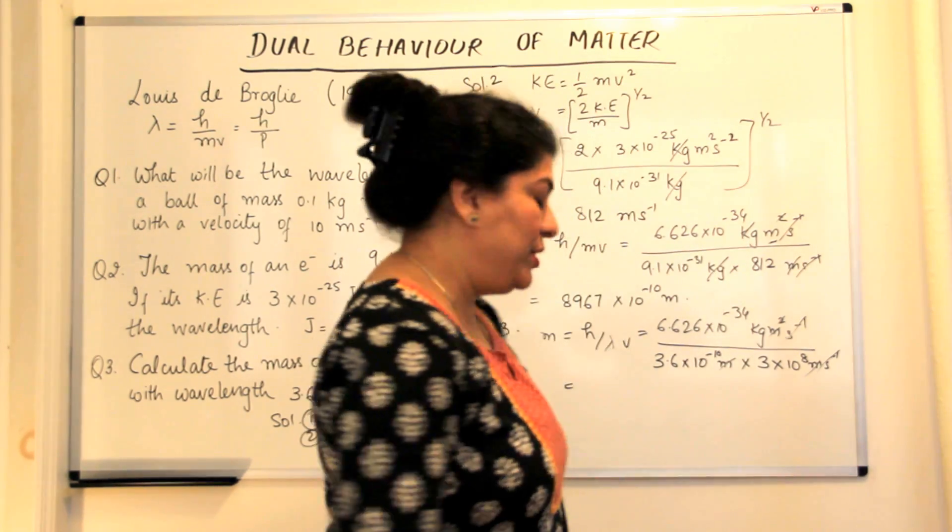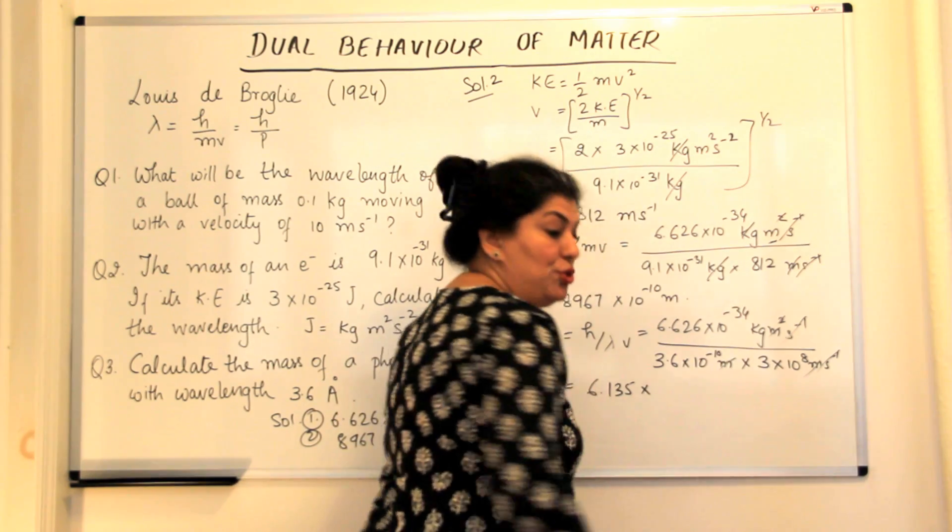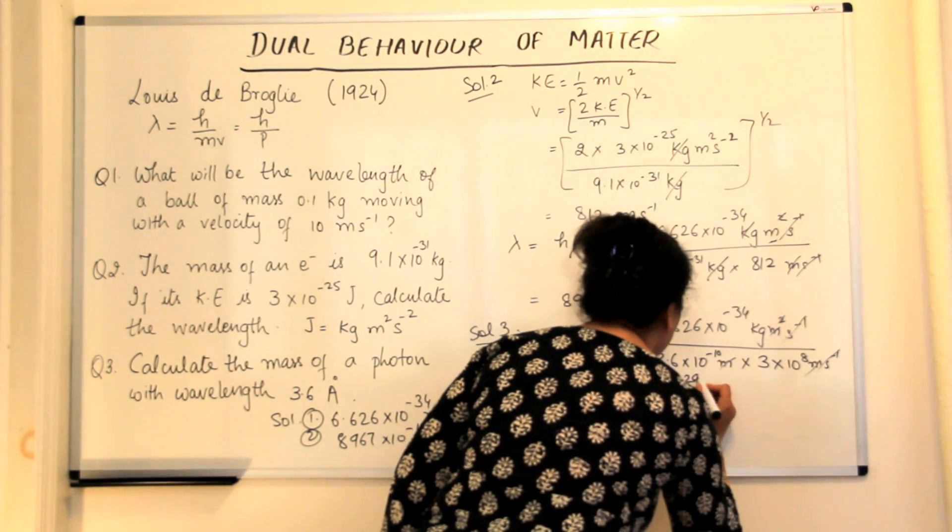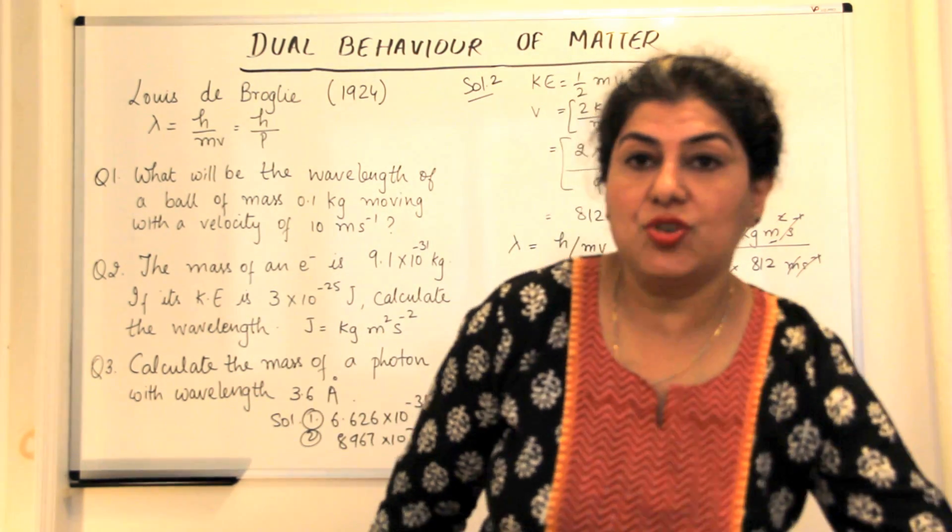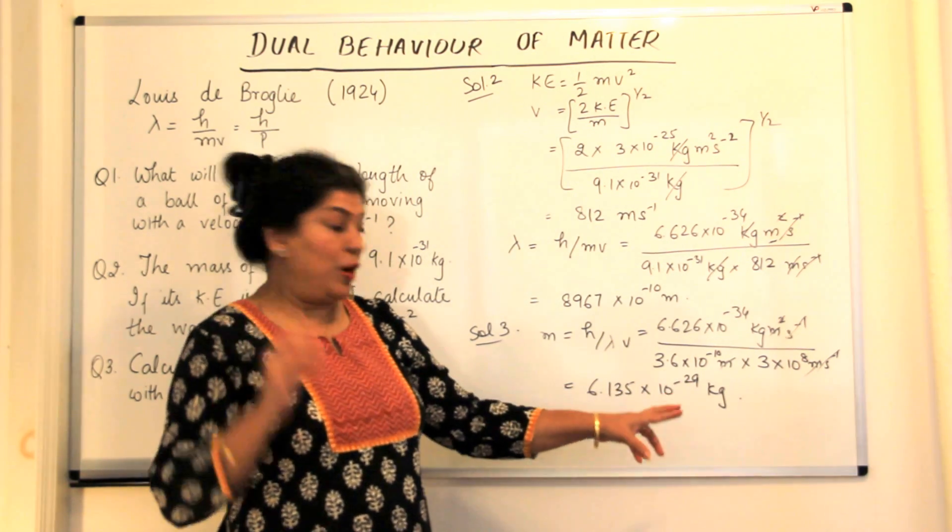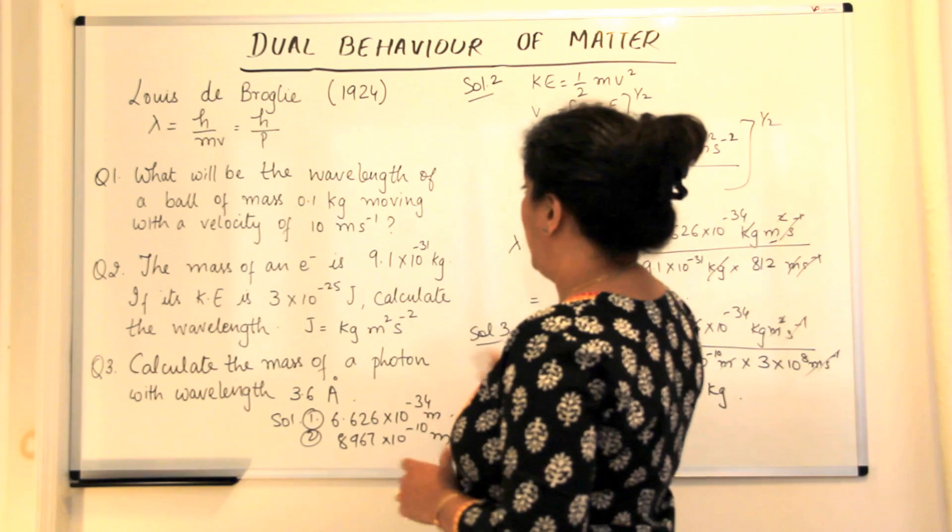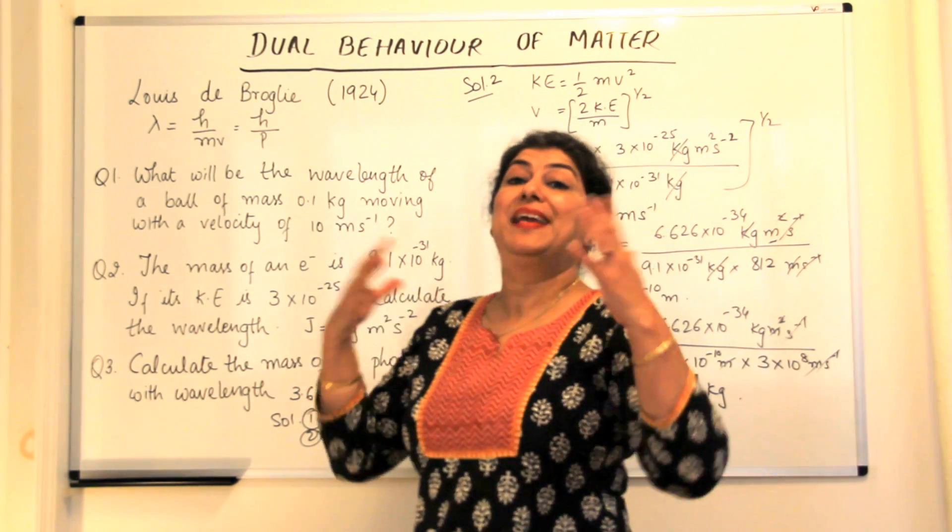the mass comes out to be 6.135 into 10 to the power minus 29 kg. So what do we see? The mass of a photon is in the range of 10 to the power minus 29 kgs. And the mass of an electron is 10 to the power minus 31 kgs.